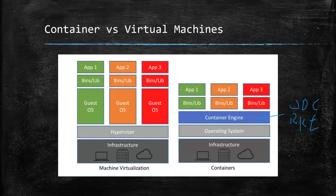We've essentially removed the guest operating system layer — the bloatware — so we're only shipping the application and its required binaries. This means applications build and run very fast. For example, to deploy a basic HTML page you only need the web server and the relevant binaries to get the application up and running, not an entire guest OS. This approach reduces the size of what gets installed and makes the runtime much faster.